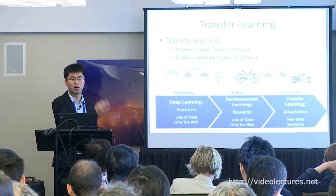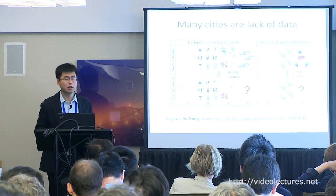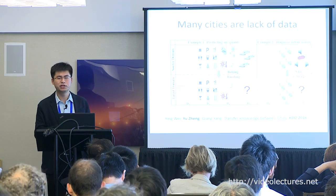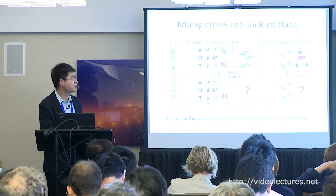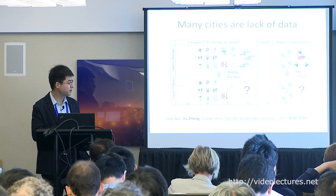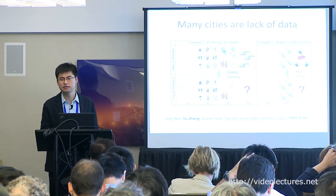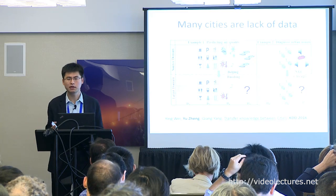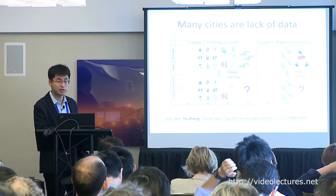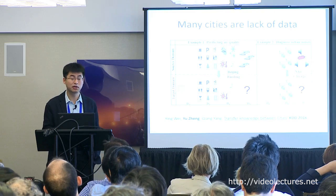Here is one example. We usually have rich data in one city, like Beijing, with traffic data, meteorological data, and point-of-interest data. But when you go to a new city, you probably have very limited data — or may be missing some datasets entirely. Can we transfer the knowledge we learn from one city to another? The challenge is you cannot directly apply a model trained in one city to another, because data distributions are very different.